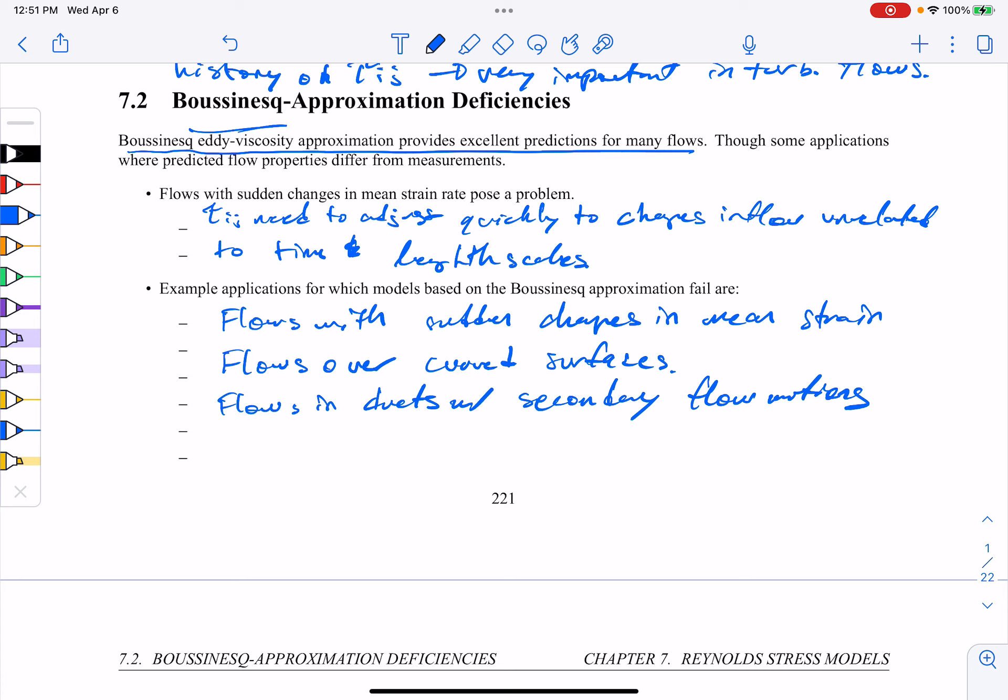Other types of flows might be rotating fluids, highly three-dimensional flows. And there's many other examples, but maybe boundary layer separation. These are given by different authors in different books on turbulence modeling.